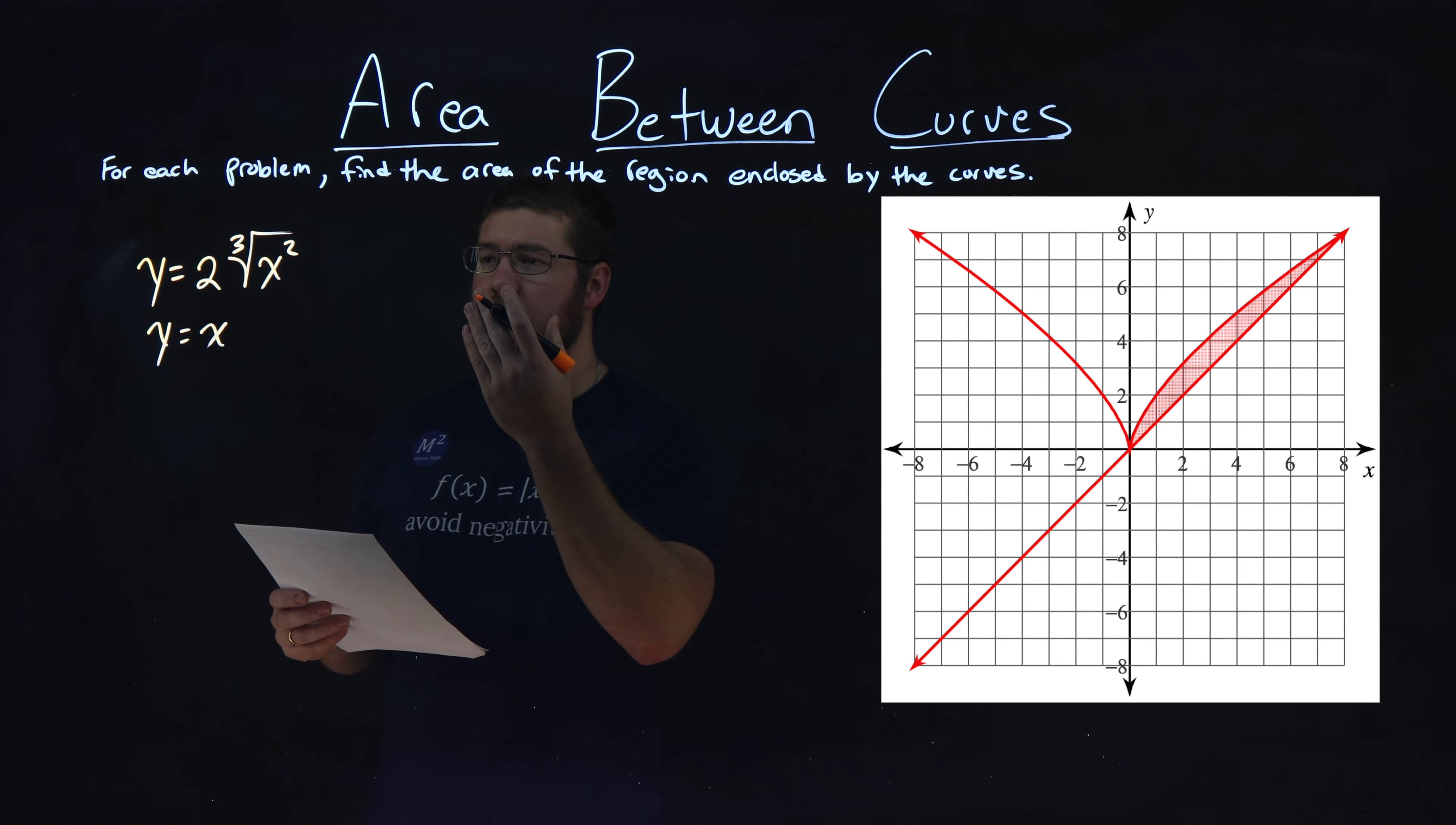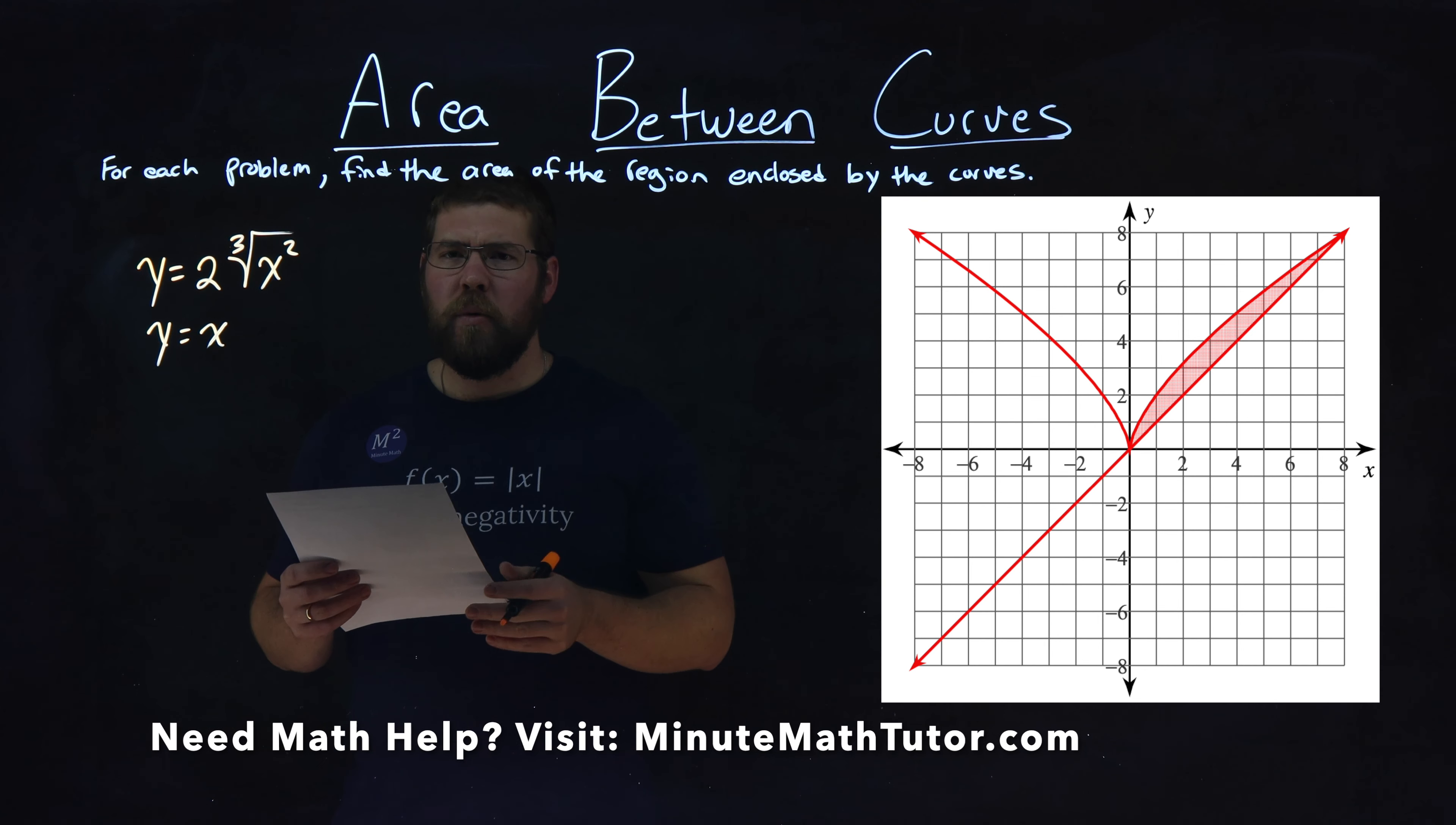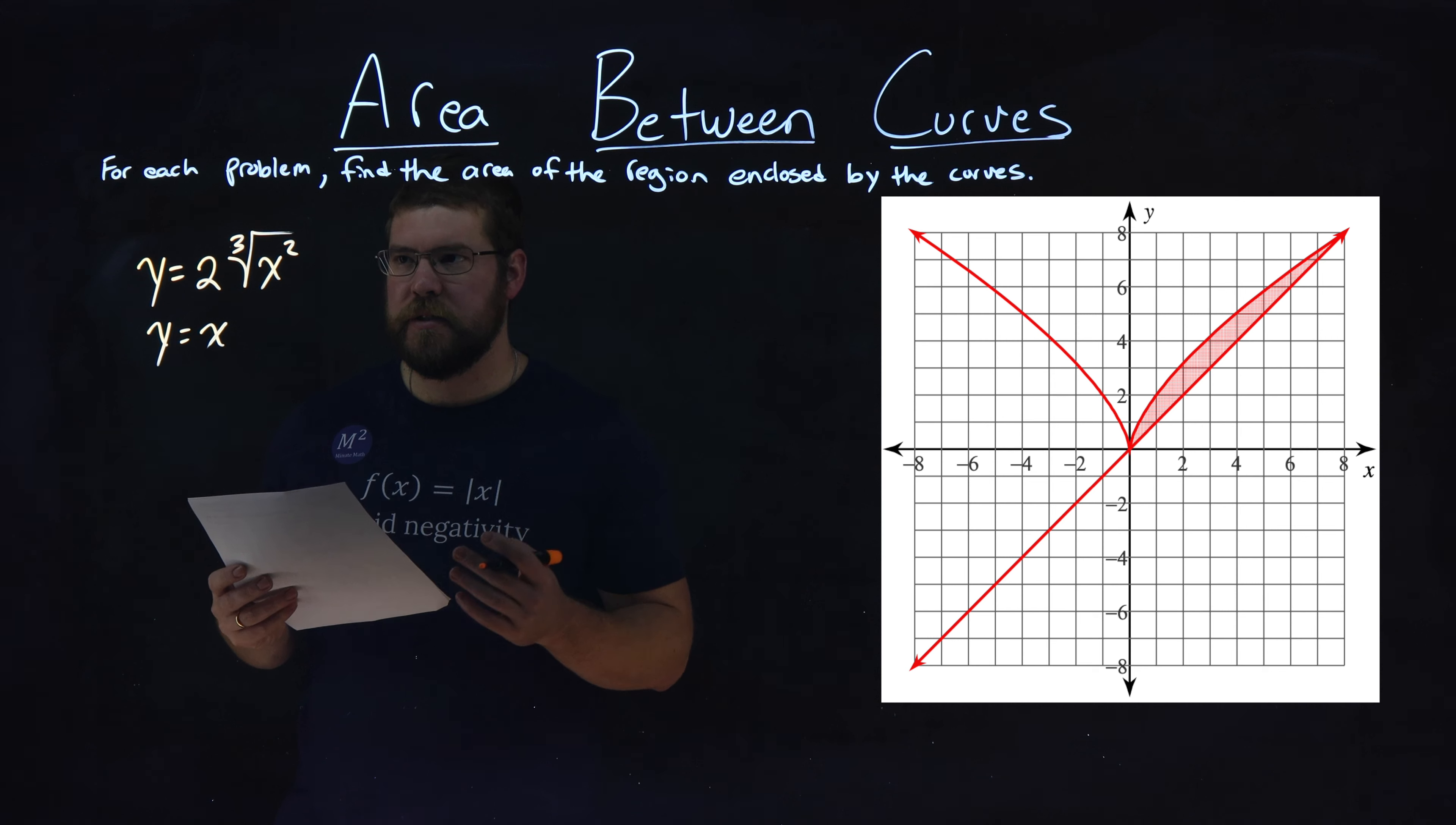We're given this problem right here: y equals 2 times the third root of x squared, and y equals x. We want to find the area between the curves here. Well, one thing we're not given is the lower and upper bound. So to do that, we actually set the equations equal to each other and see where they intersect.